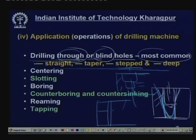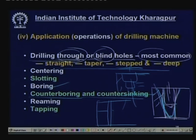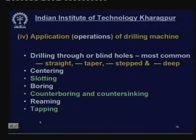In addition to making holes, drilling machines can perform: centering — making small holes at the end of a job to be turned in a lathe; boring — for enlargement of holes; counter boring and counter sinking; reaming — for finishing by reamer; and tapping — for cutting internal threads in nuts. All these operations will be discussed in more detail.